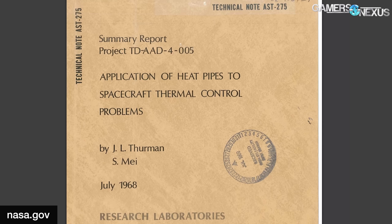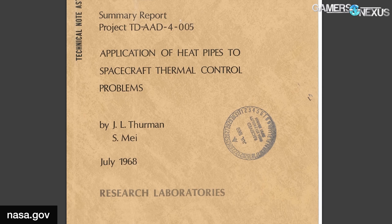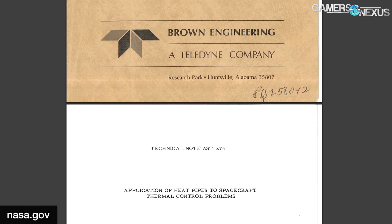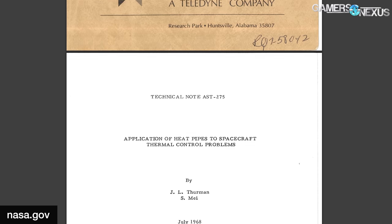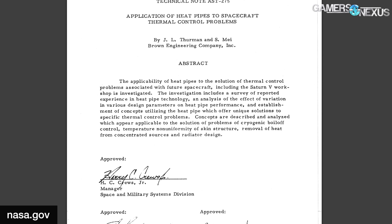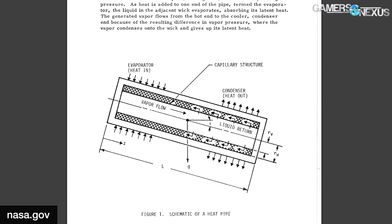Heat pipes have been in use for a long time, but probably the most notable use is in NASA and spacecraft, satellites, things like that. There's a research paper from NASA from about 1968 where they talk about heat pipes specifically. They're useful in space where you don't have air that you can push through a heat sink, so a phase change is one of the best ways to shed some of that energy.